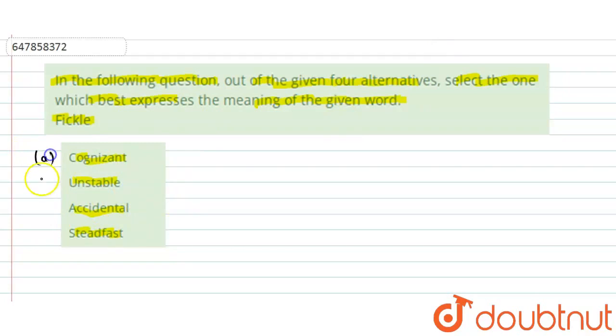So here we have option A, B, C and D. First of all, we are given the word fickle.